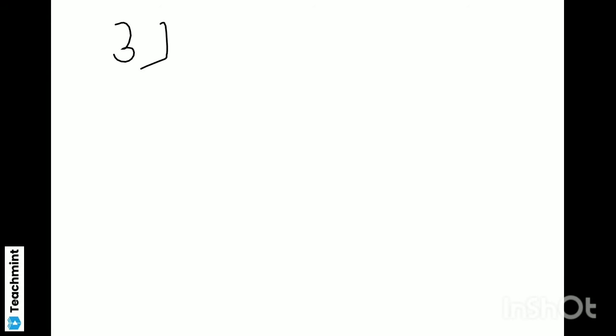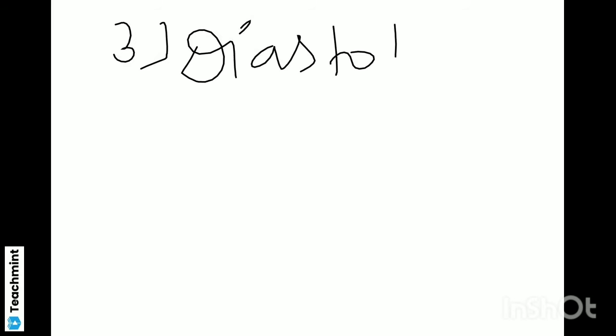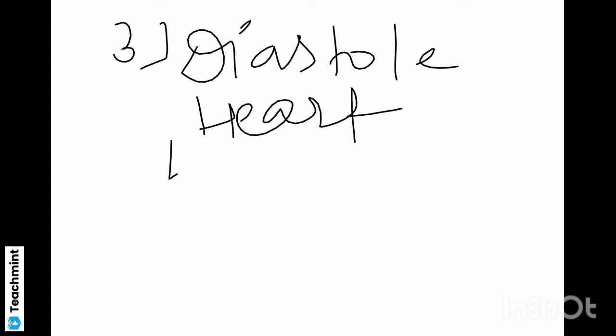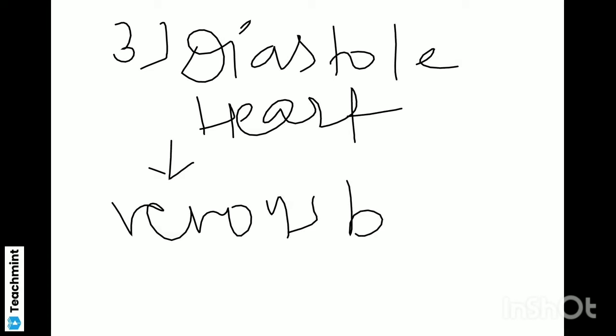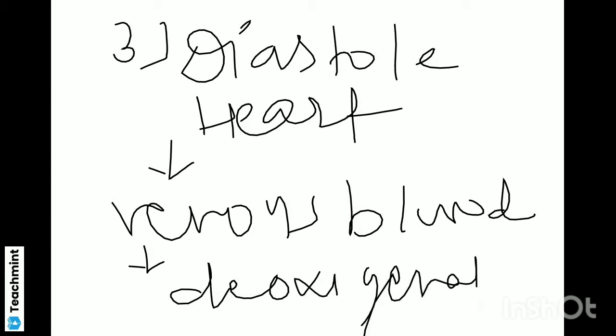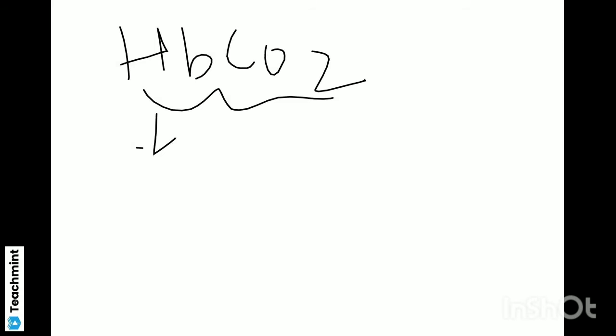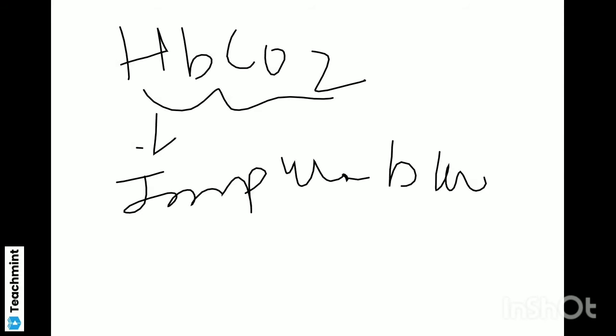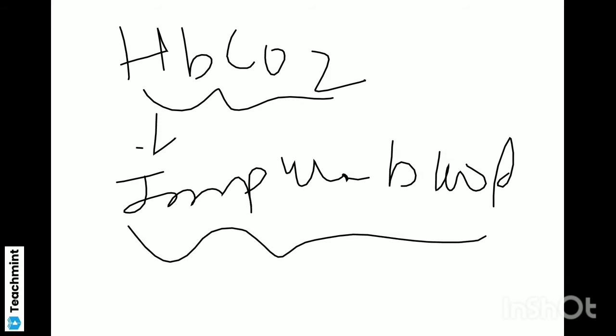Question number three: During the diastole, the heart is filled with — so diastole ke process mein heart fill hota hai. This is venous blood, or we can say deoxygenated blood, HBCO2, or impure blood. Remember these points: diastole ki condition mein us time par impure blood ya venous blood heart mein flow hoga, ya heart filled hoga.